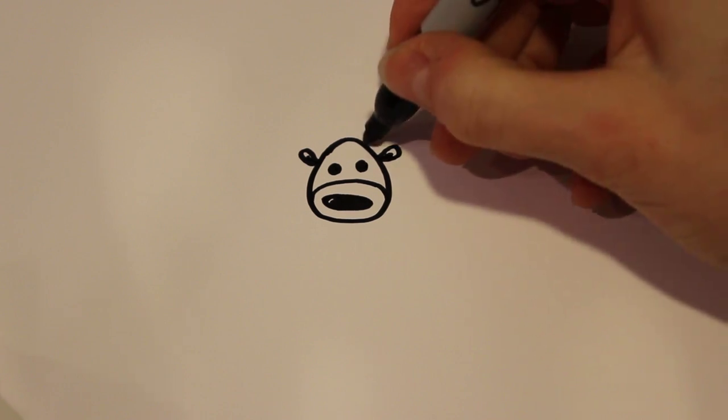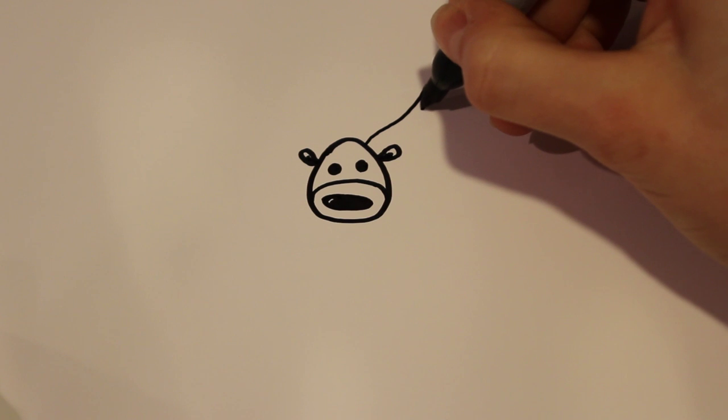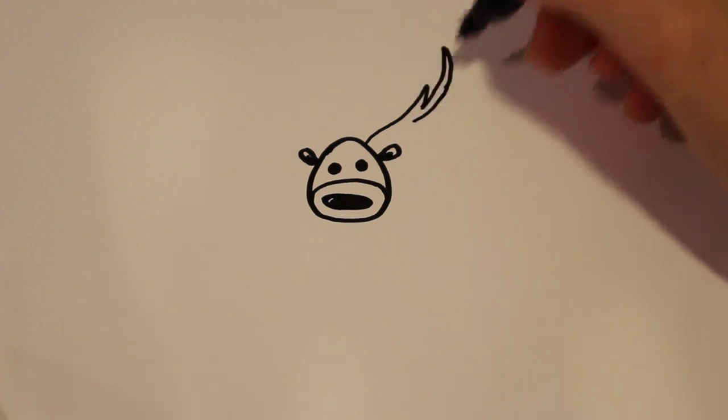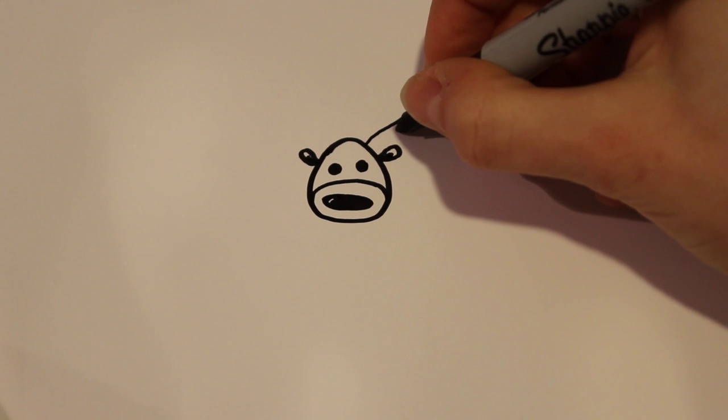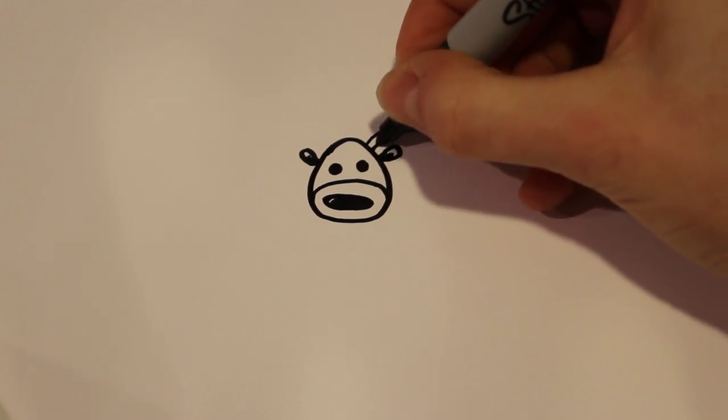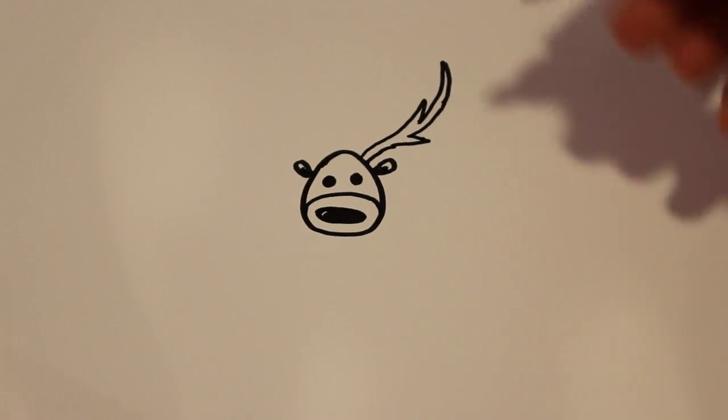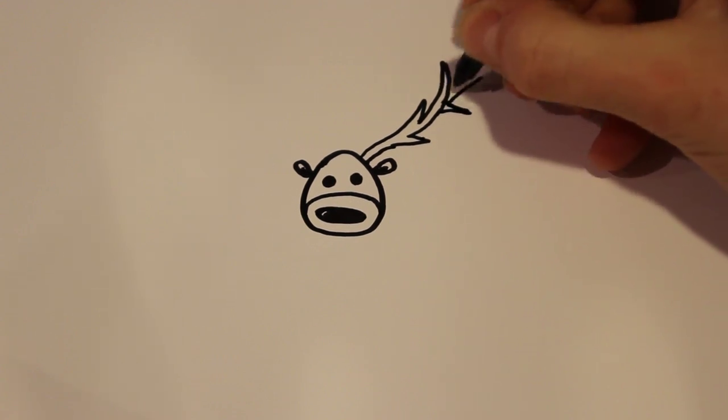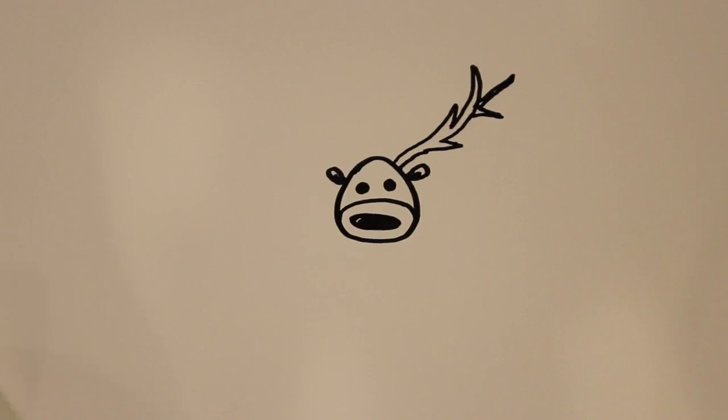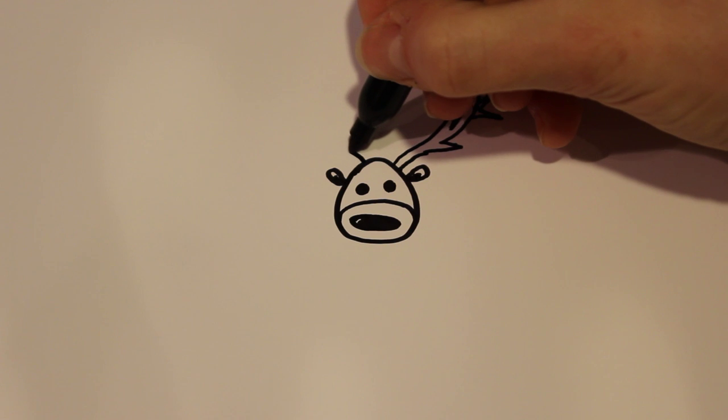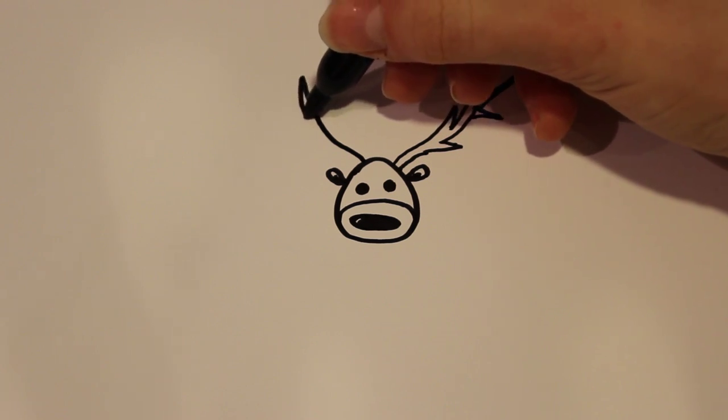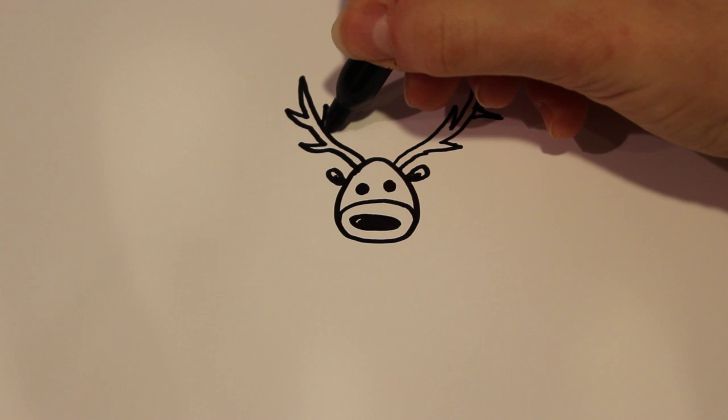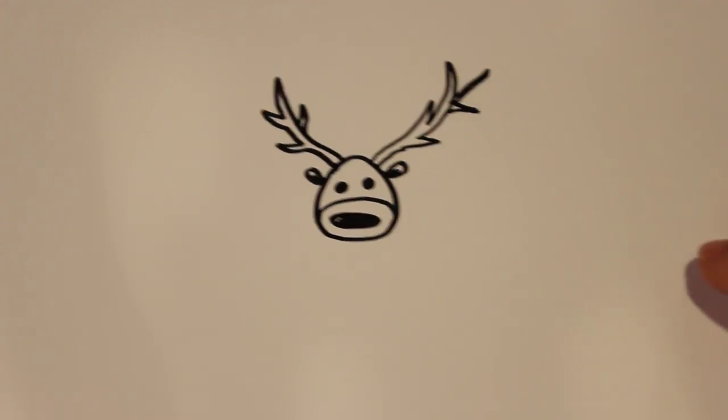For the antlers, I'm going to draw three spikes kind of branching out. You're going to do two on one side like that, then branch back down and draw the third one. If you want, you can always add more. They don't all have to be connected. On the other side, I'm going to do the exact same thing, but this time I'll add two on the inside right away and then one more on the outside. So there's the antlers.